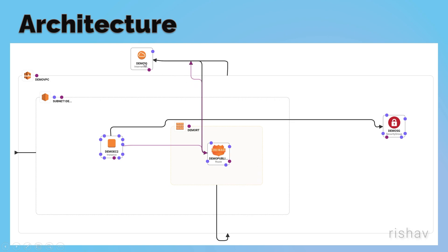Inside that route table we will have our routes, which will be pointing to the EC2. We will also have security groups.